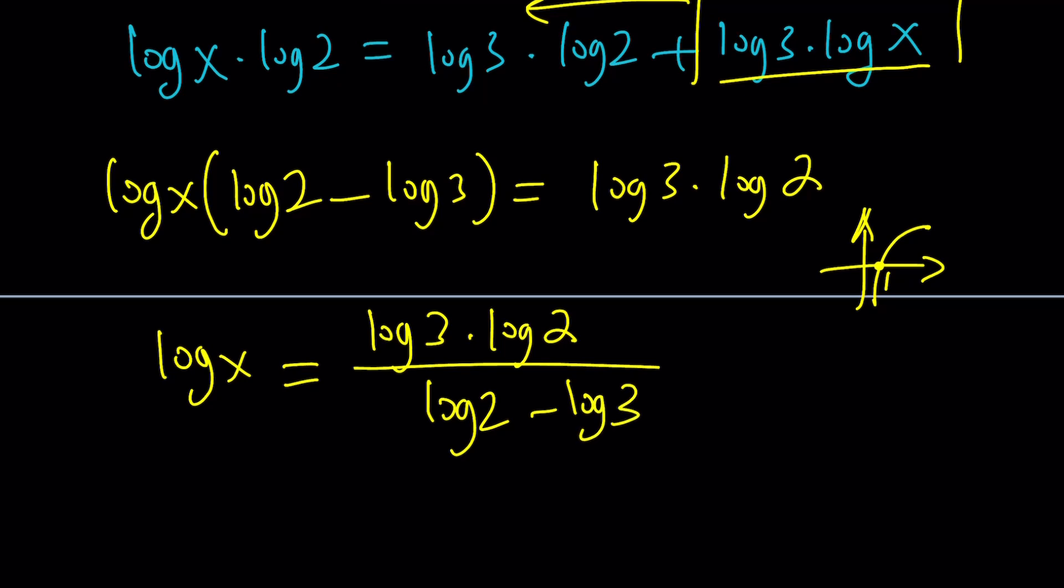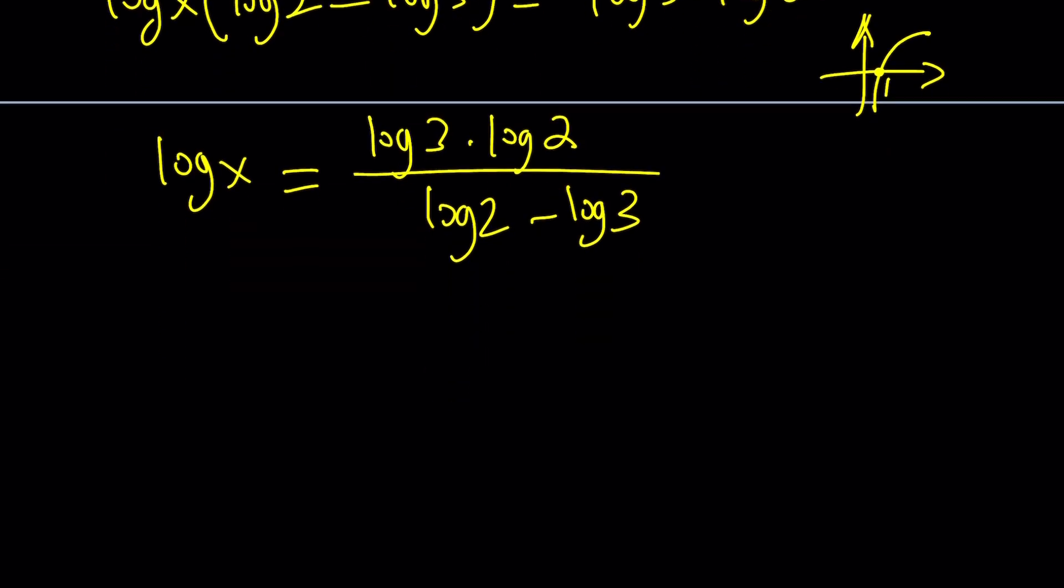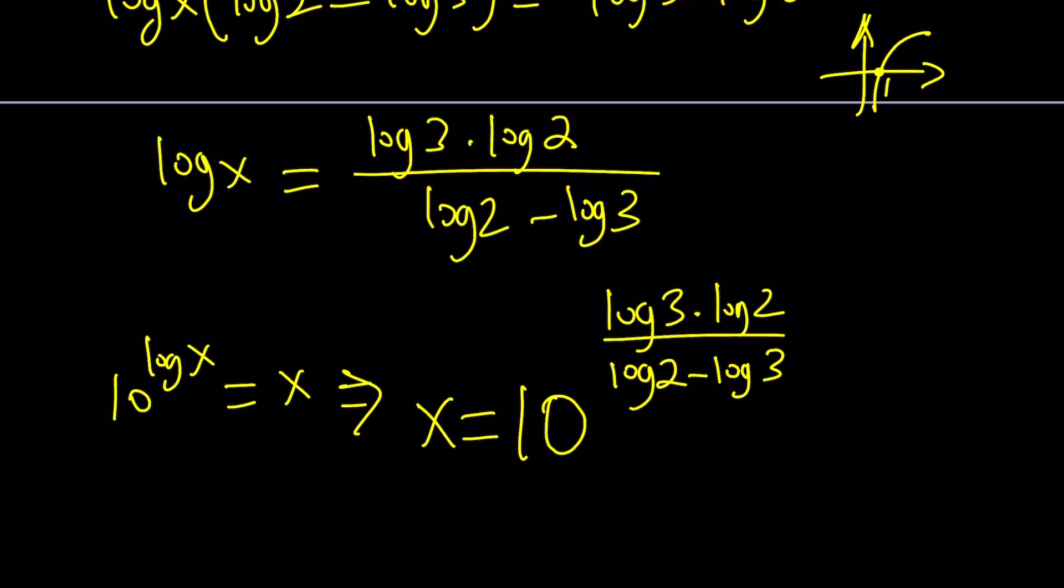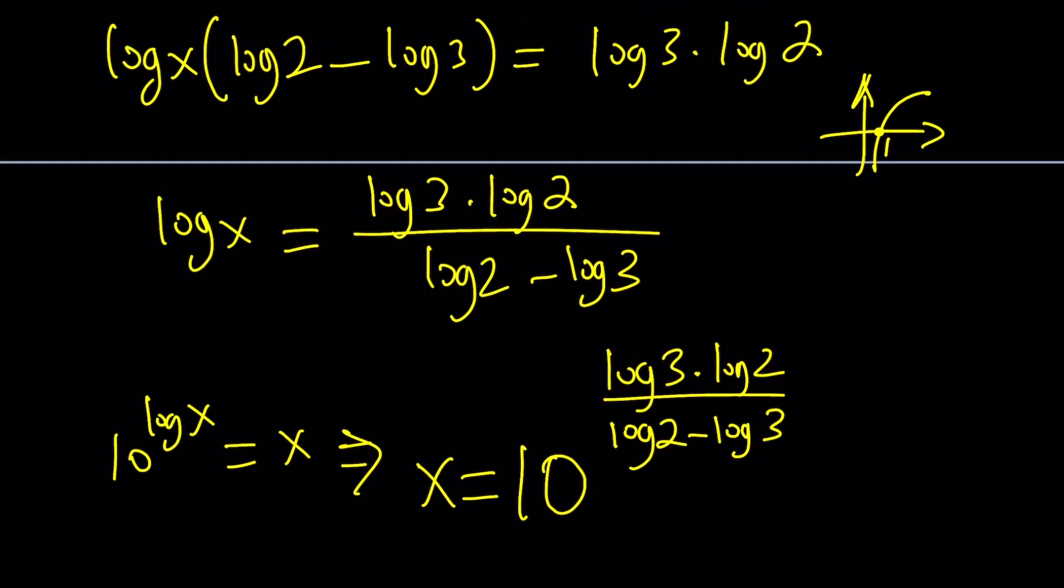This is divided by log 2 minus log 3. We're almost there. This is log x. And remember, 10 to the power log x is the same as x. So if you put this as 10 to the power, from here you're going to get x equals 10 to the power log 3 times log 2 divided by log 2 minus log 3. Again, as an exponent, a negative number just means that it's the reciprocal. It doesn't mean the number is negative. Because x is not negative, obviously, in this case. And that will be the answer.